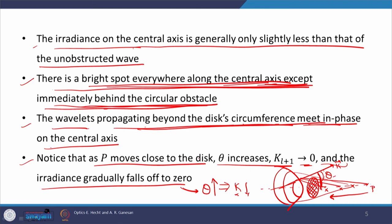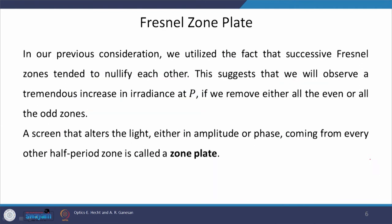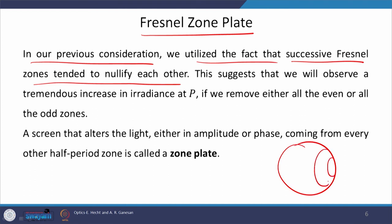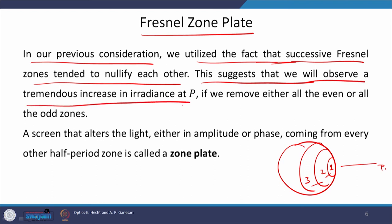The next topic in today's lecture is the Fresnel zone plate. In our previous consideration we utilized the fact that successive Fresnel zones tended to nullify each other — the first nullifies the second, and the second nullifies the third, because they are out of phase by 180 degrees. This suggests that we will observe a tremendous increase in irradiance at point P if we remove either all even or all odd zones.